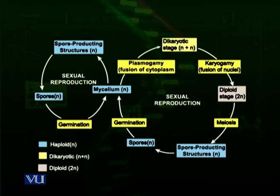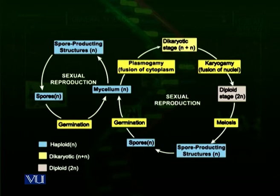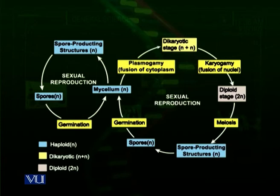Fungi can enter sexual reproduction when required by environmental conditions. This process begins with plasmogamy — the cytoplasm of two cells is fused. Filaments of opposite mating types come together and produce fusion tubes, through which their cellular plasma fuses. When plasmogamy occurs, the resulting cell has two nuclei — one from each cell. This is called the diakaryotic stage, where two haploid nuclei, each with N number of chromosomes, are present inside the cell.